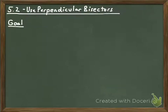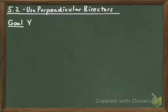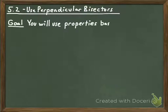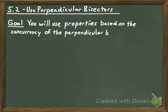Greetings, everybody. We're going to continue our lesson on section 5.2, in which we're talking about perpendicular bisectors. Now we're going to focus on the perpendicular bisectors that you can make out of each of the three sides of a triangle. The goal is that you will use properties based on the concurrency of the perpendicular bisectors of a triangle.